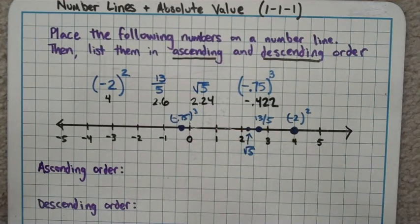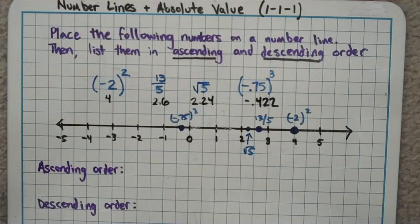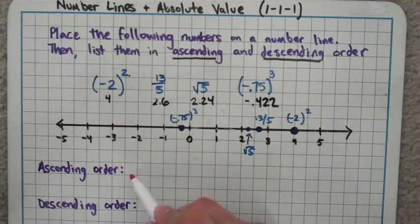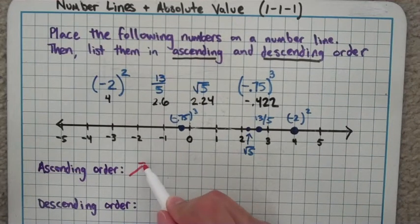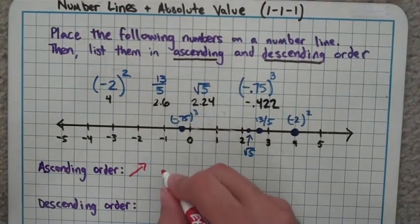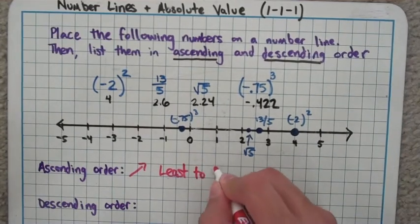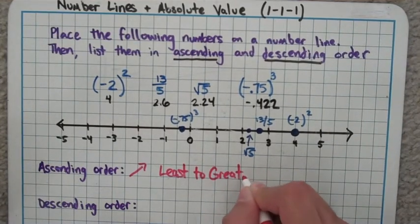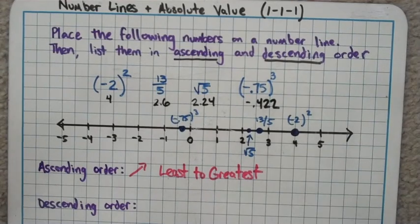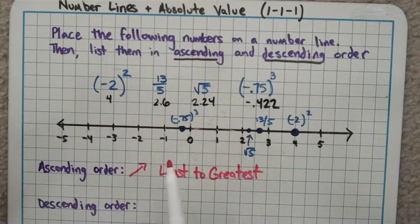Now we're asked to put these numbers in ascending order and descending order. These are two vocab words that you may not have heard before. I'm guessing you probably heard them referred to in another vocab sense, so I'll give you that word as well. Ascend. If you're ascending a staircase or something, you're going up it. Ascending order is the same thing as least to greatest. That's probably how you saw it in your previous classes.